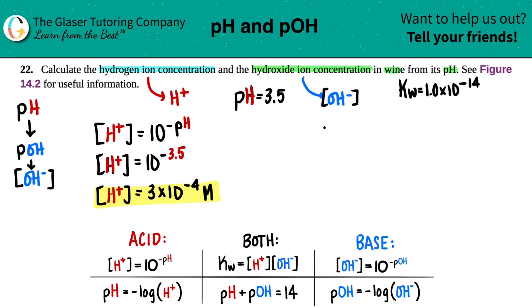So basically 1 times 10 to the negative 14th. So I'm just going to use that formula. Kw equals the two concentrations multiplied by each other, right? We got the H+, which we found out, 3 times 10 to the negative 4th, times by the OH-, which is what we're trying to solve for.